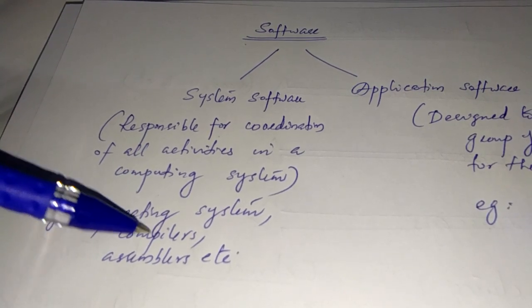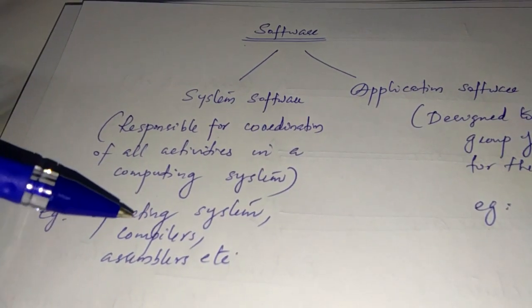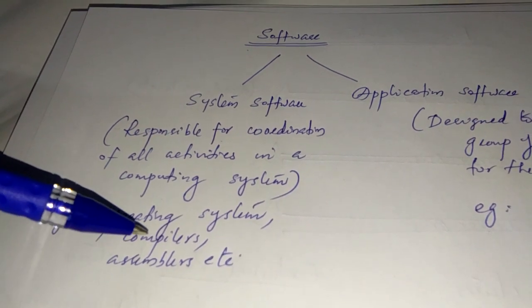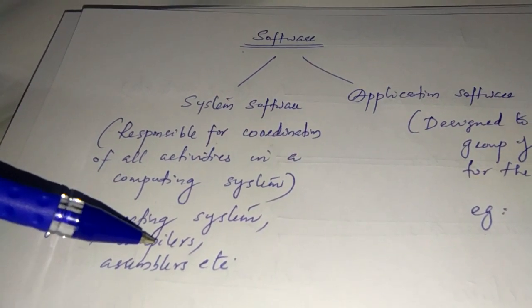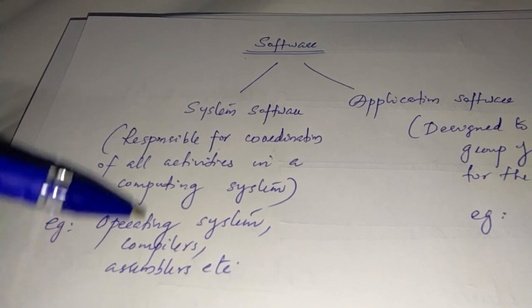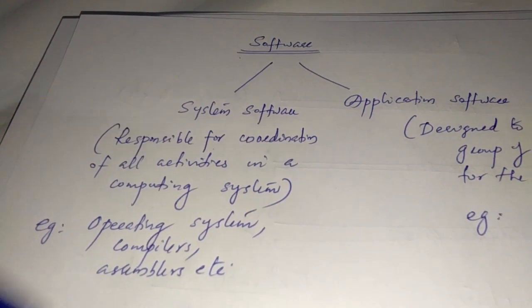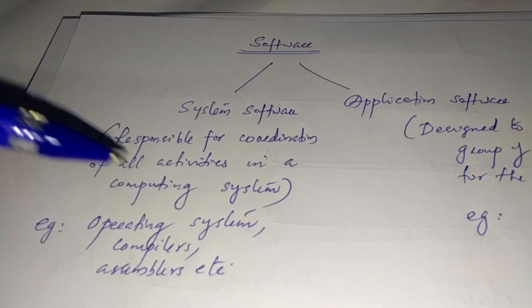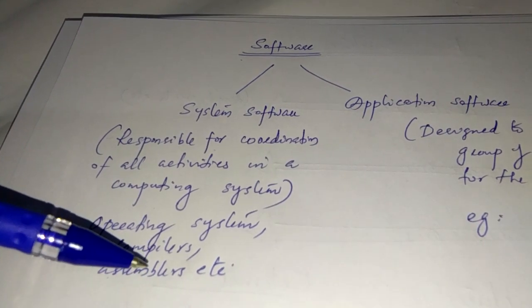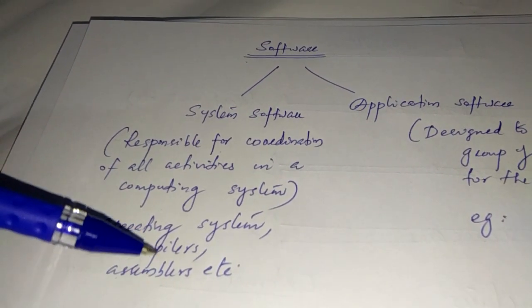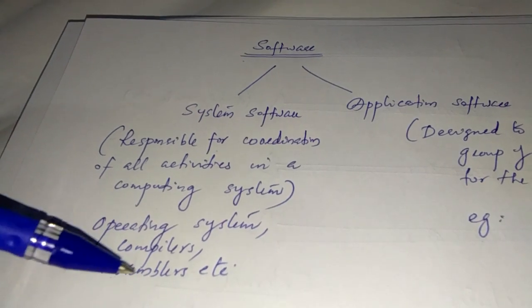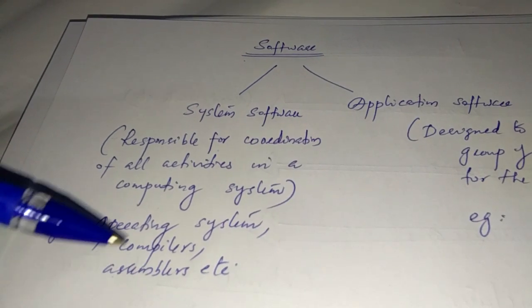The compiler is a language translator used to convert a high-level language program into a low-level language program. So that is also an example of system software. Assemblers convert assembly language programs into binary language — so assemblers are also an example of system software.